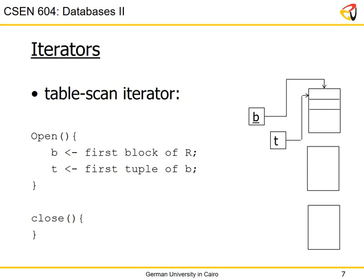Once we divide the table into pages, we need a systematic way to traverse all the content from the first row in the first page to the last row in the last page — and the iterator is the solution. A table scan iterator's open method uses two pointers, B pointing to the first block or page of the table, and T pointing to the first tuple in that block.